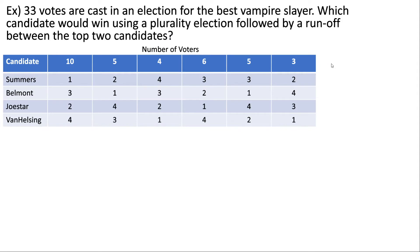Let's look at another example. 33 votes are cast in an election for the best vampire slayer. Which candidate would win using a plurality election followed by a runoff between the top two candidates? We already did the plurality portion in the last video. Recording those numbers: Summers had 10 votes, Belmont had 10 votes, Joe Starr had 6 votes, and Van Helsing had 7 votes. So we had a tie between Summers and Belmont. Runoffs are a useful way to break a tie.